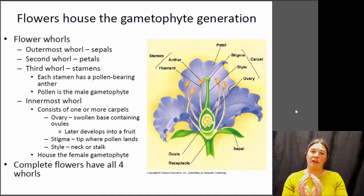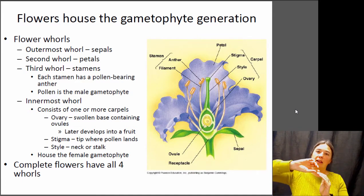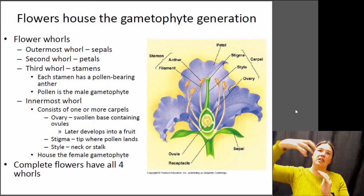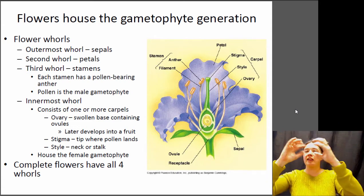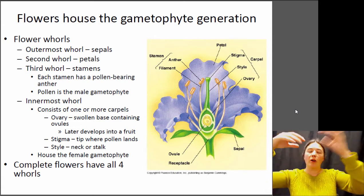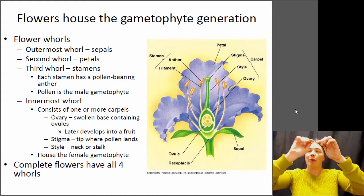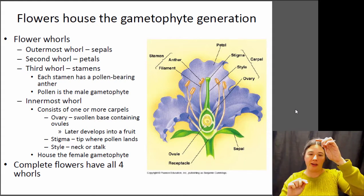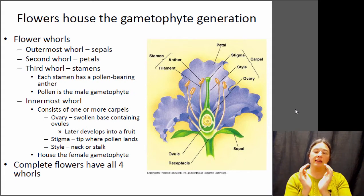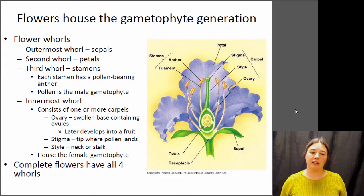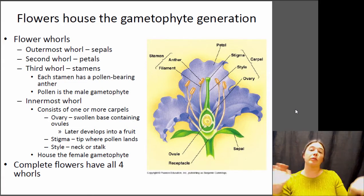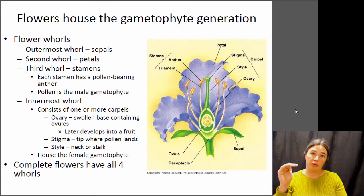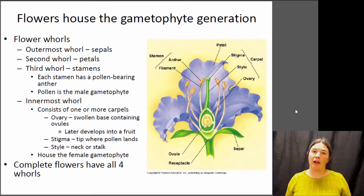On top of the ovary you have the style, which is a long extension that goes up to connect to the stigma, which has a sticky surface — that's where the pollen grains will actually land. The pollen grains land on the stigma, the pollen tube grows down the style to the ovary to pollinate the megaspores within the ovary, and that's where the seed is going to form. A flower that has all four whorls — sepals, petals, stamens, and carpels — is called a complete flower. Not all flowers are complete.